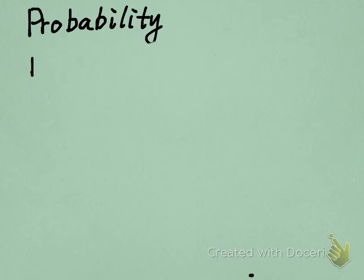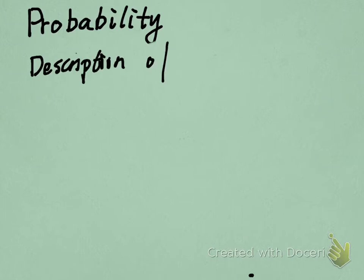So probabilities is a method we can use to describe some random variable. This is a description of randoms. Randoms is something like, generally, we talk about whether there is more chance something will happen or not. So this is the random we talk about.